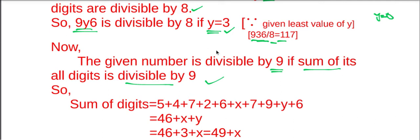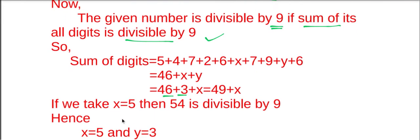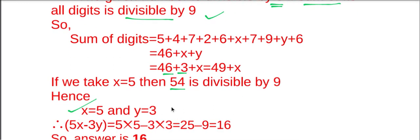So we got the value of y, y equal to 3, then 46 plus 3 plus x. So 46 plus 3 is 49 plus x. If we take x equal to 5, then it becomes 49 plus 5 is 54, and 54 is divisible by 9. Hence, value of x is 5 and y is 3.